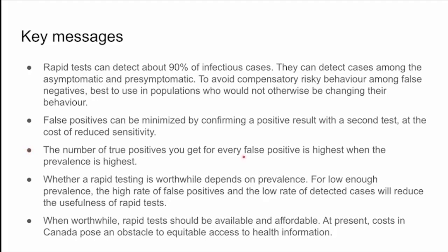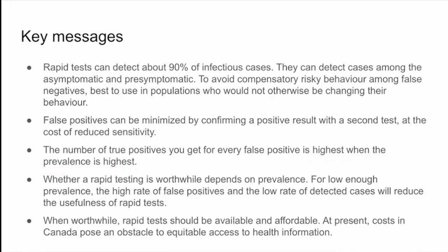The ratio of true positives to false positives improves as prevalence increases — you'll have a higher ratio of true positives caught to false positives occurring. Whether a rapid test is worthwhile depends on prevalence, and the issue with false positives is something to look out for. When worthwhile, rapid tests should be available and affordable. In BC this has been a problem — tests have cost about five times what they go for in Europe, where you can get them for a dollar or two. It would be great to have rapid tests that are more available and affordable, which is certainly not currently the case in BC.